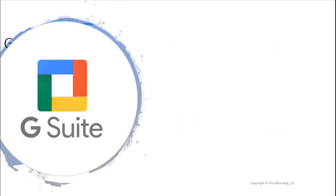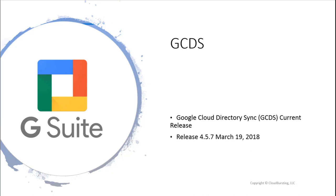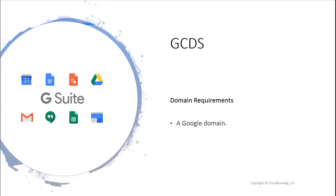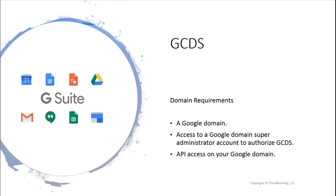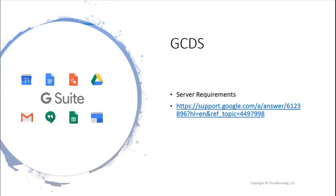GCDS includes extensive tests and simulations to ensure everything is correct before you perform any actual changes, and has all components in the installation package along with security features. The current release at the time of recording is release 457 as of March 19, 2018 — check for a newer release. Domain requirements include a Google domain, a Google domain super user account to authorize GCDS, and API access to your Google domain. The download is available at tools.google.com.